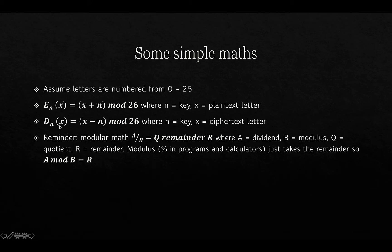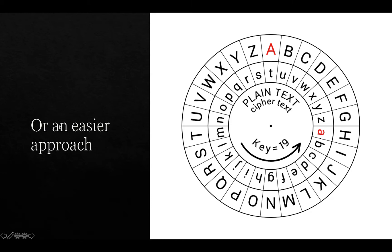Without going through all the maths, this is generalized to a very simple formula where N is the key. To encrypt a function of X, we take X (the plain text letter), add N, and then mod 26. If you're not familiar with modular arithmetic, there are plenty of videos to look at. More simply, you can use a Caesar cipher wheel where the inner circle rotates by the number of places you want to shift. But if you're coding it, you'd need to use the modular approach.